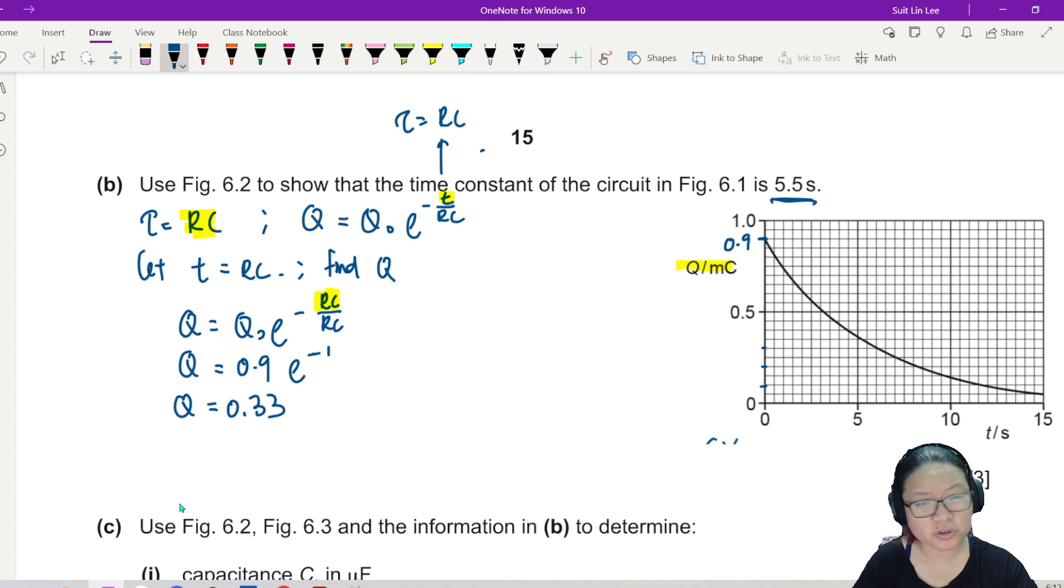I got to find 0.33. So 0.1, 0.2, 0.3, 0.35. So 0.33 is somewhere in the middle. Paper 4 can read to the middle. Paper 5, try not to, but paper 4 can. 0.33. You can cheat, inverted comma a bit, because 0.33, you know your answer is supposed to be 5.5. So show on the graph. Show this on the graph.